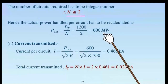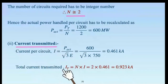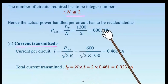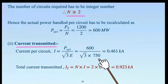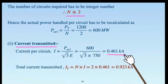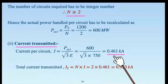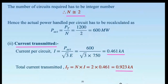The current per circuit at 750 kV is calculated as I = P / (√3 × E) = 600 / (√3 × 750) = 0.461 kilo-amperes. The total current transmitted across both circuits is 2 × 0.461 = 0.922 kilo-amperes.